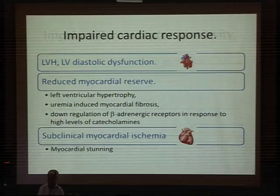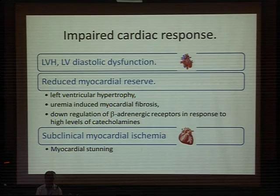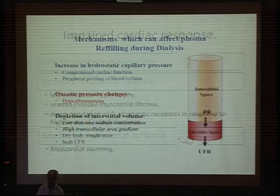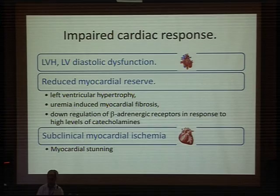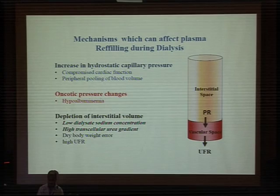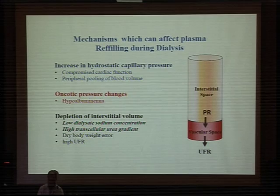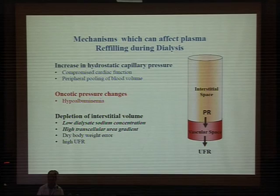The patient may have impaired cardiac response such as left ventricular hypertrophy, left ventricular dysfunction with reduced myocardial reserve, and subclinical myocardial ischemia. The mechanisms affecting fluid refilling from interstitial to vascular space include increased capillary hydrostatic pressure, decreased oncotic pressure, depletion of interstitial fluid volume due to low sodium concentration, high transcellular urea gradient driving fluid to the microcirculation.